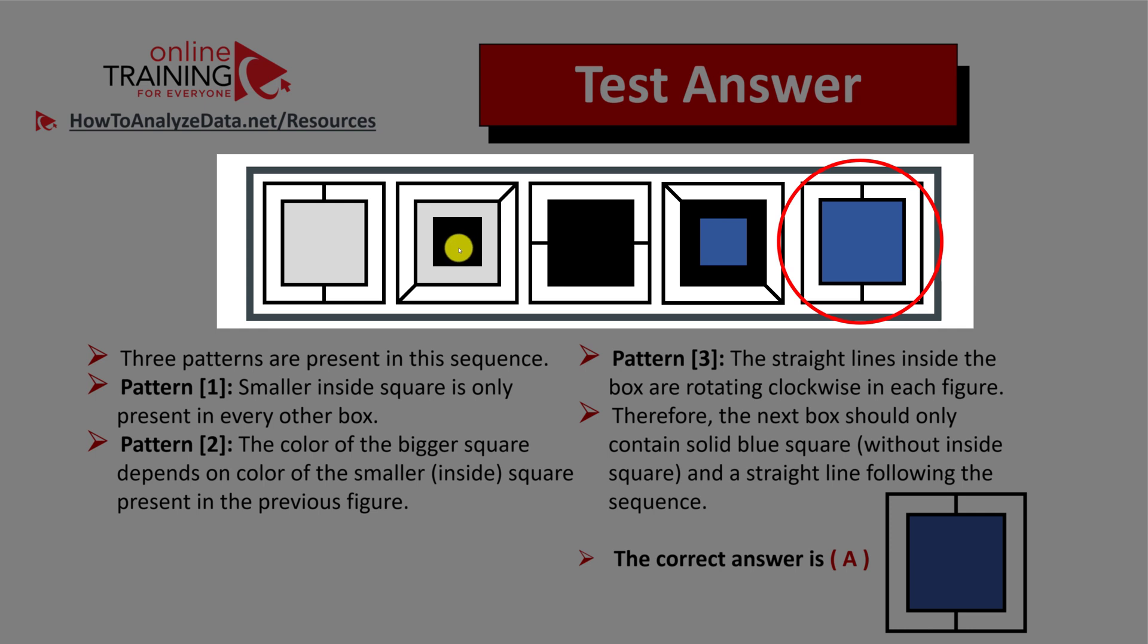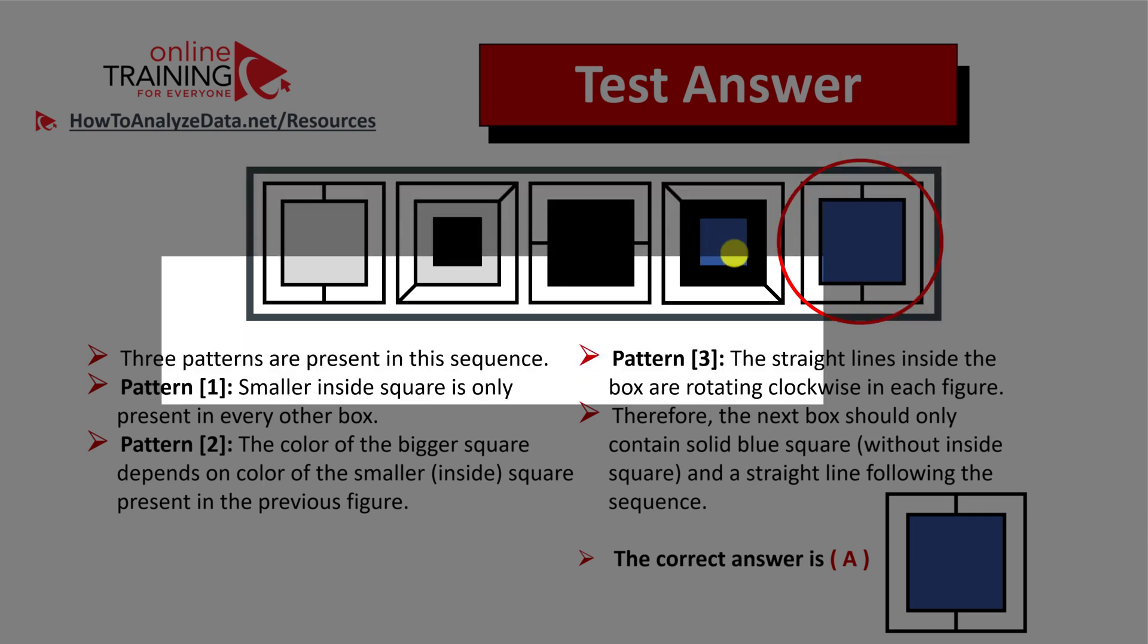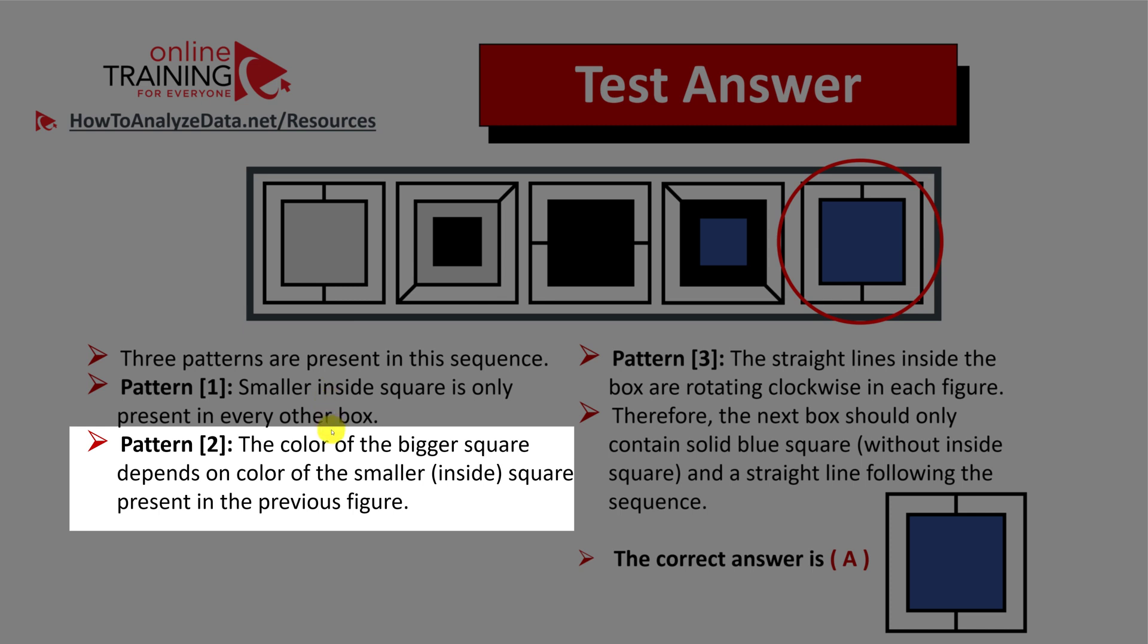There is a second pattern here as well. The color of the bigger square depends on the color of the smaller inside square present in the previous figure.